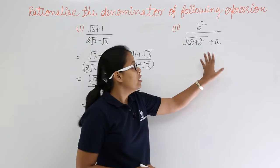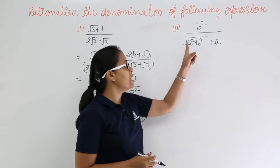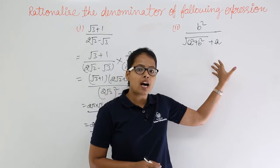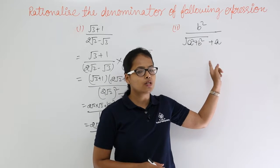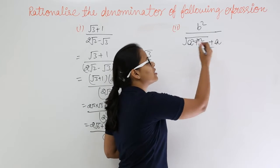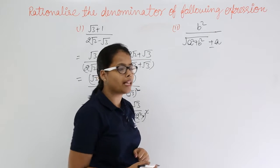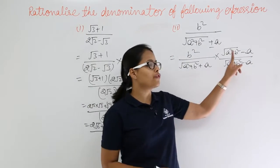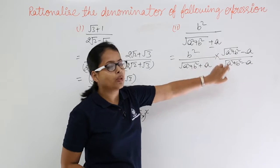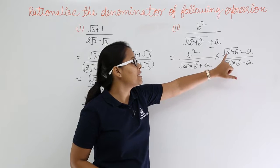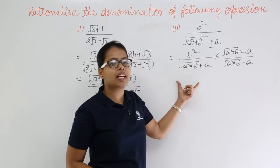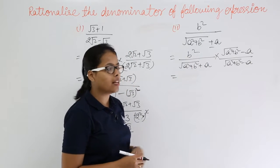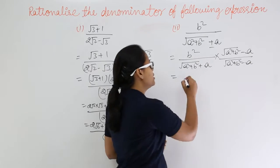Now let's move on to the second problem: b squared divided by the quantity root of a squared plus b squared, plus a. As you have been asked to rationalize the denominator, the sign of plus will change to minus. So we multiply numerator and denominator by root of a squared plus b squared minus a, and after cancellation we will be left with the same original expression.